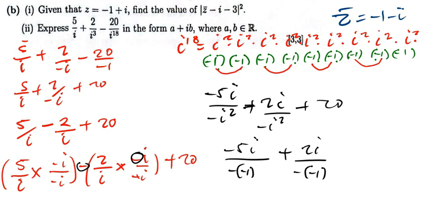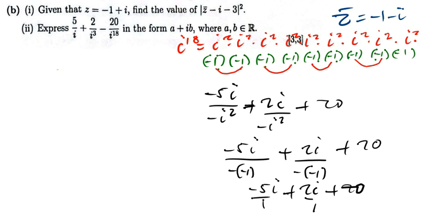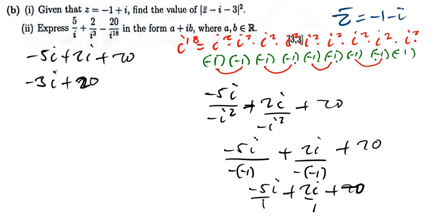So this gives negative 5i divided by negative 1, plus 2i divided by 1, plus 20. Simplifying: negative 5i plus 2i plus 20 gives negative 3i plus 20. Since we leave the answer in the form a plus ib, the real part comes first: the answer is 20 minus 3i.